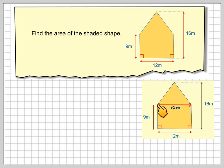In order to find the area of the triangle we will need to know the vertical height and we can get that by doing 16 minus 9, which gives me 7 meters.